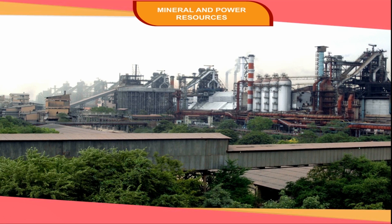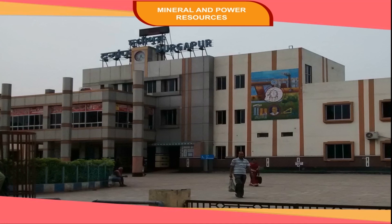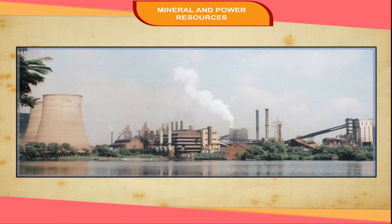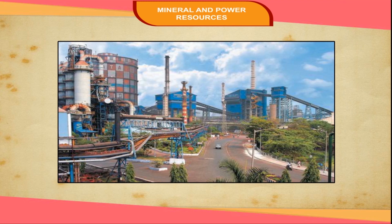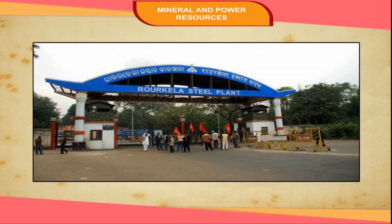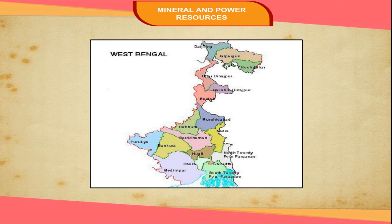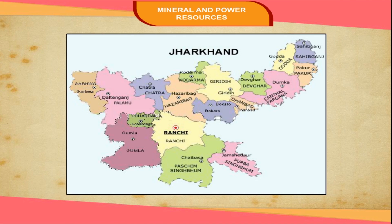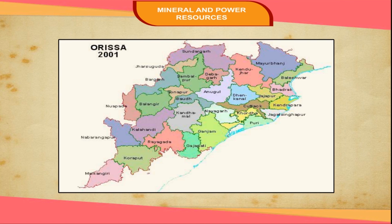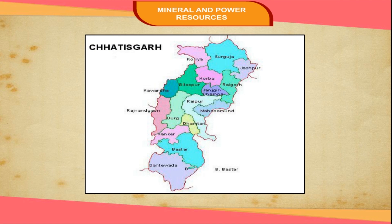Important steel producing centers — Bhilai, Durgapur, Burnpur, Jamshedpur, Rourkela, and Bokaro — are situated in a region that spreads over four states: West Bengal, Jharkhand, Odisha, and Chhattisgarh.